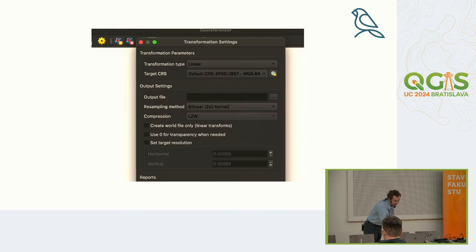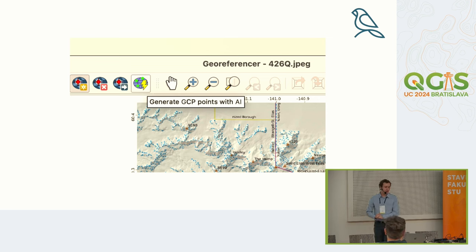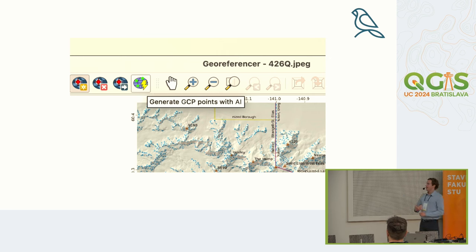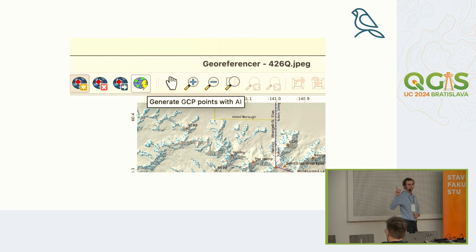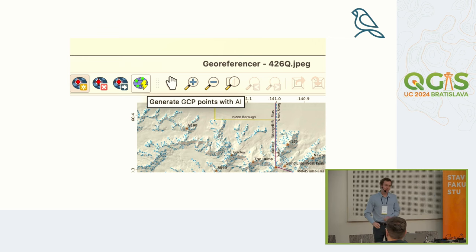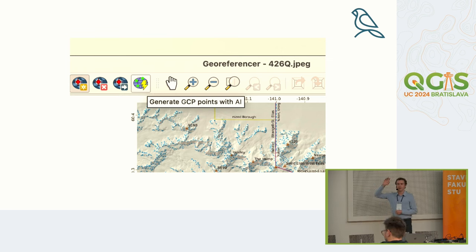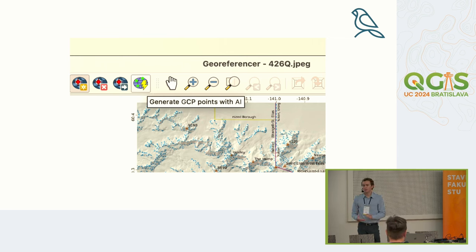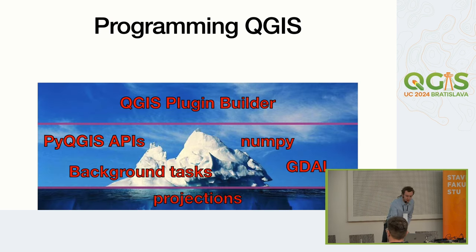So let's look at what integrating this into QGIS looks like. We added a button inside the QGIS georeferencer — you can just hit it and run the AI georeferencer. Does anyone know how to do this? I'll give you a hint: there's no API for adding a button to the toolbar in the QGIS georeferencer. Nearly half of you guys have built a QGIS plugin, so if you've learned how to build one online and gone through those tutorials, you might have a certain conception of what building a QGIS plugin looks like.